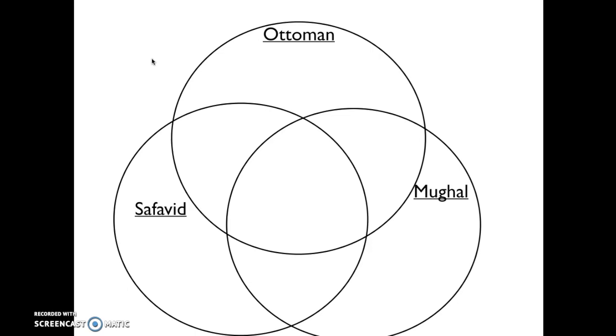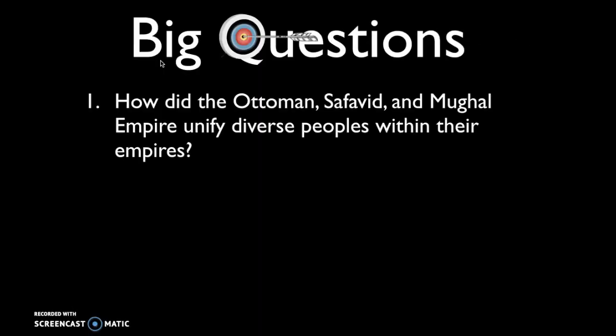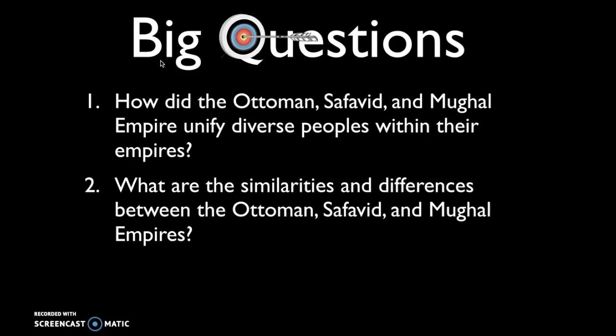After watching this video you should be able to answer the first big question: how did the Ottomans, Safavids, and Mughals unify diverse peoples within their empire? You should also use the Venn diagram to answer the second question about similarities and differences between the three empires. Thanks for watching.